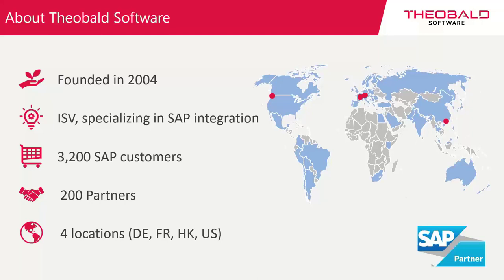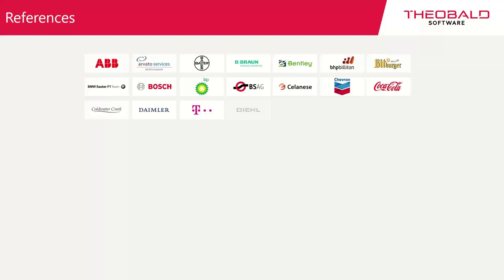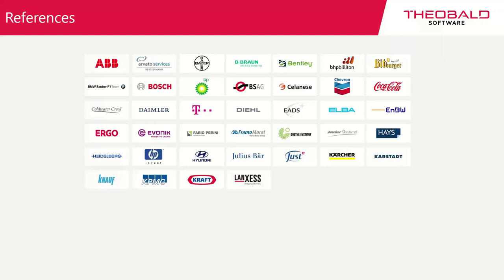We work with partners — on one side we have technology partnerships, for example with SAP where we have certified our product, and we also work with technology companies like KNIME to improve integration between different tools. We also have partners for implementing and supporting customers in their projects. We are headquartered in Stuttgart, Germany, with locations in the USA, Paris, China, and Hong Kong.